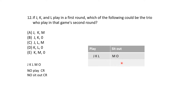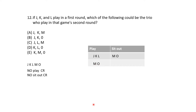M, R, O are going to play in the second round. Round 2 is going to include M, R, O. The possibilities for round 2 combining with J and L are: M, O, J or M, O, K or M, O, L. M or O is in round two.